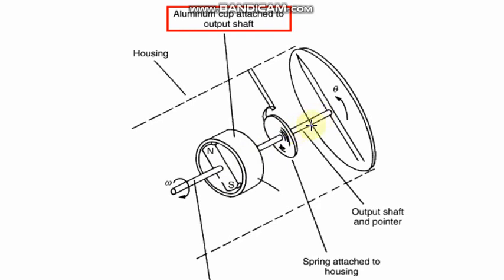The output shaft is connected with the pointer, and the pointer will cover the angular displacement according to the angular velocity of the shaft whose speed has to be measured. With the output shaft, a pointer and one spring are attached to the housing. Since it is attached to the housing, it has one torque which will oppose the movement of this output shaft.